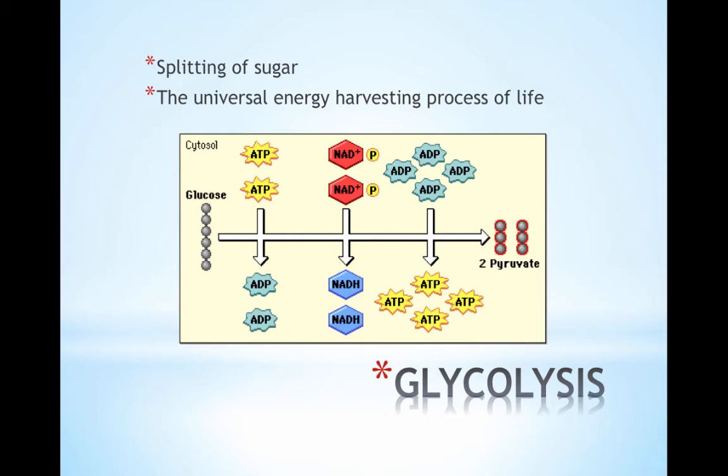This is part two of AP Biology Cellular Respiration podcast. Glycolysis is the splitting of sugar. It is the universal energy harvesting process of life. One glucose is broken into two pyruvic acids. Two ATPs are produced and two NADHs in addition to two hydrogen ions.